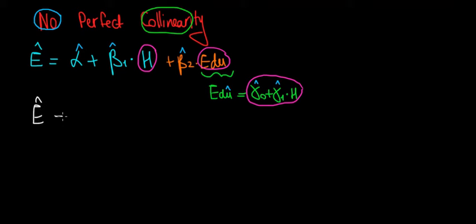So the earnings is going to be equal to, let's just open the brackets and see what we get. We will have our constant alpha. I put the hats because this is all based on sample data. So we have beta 1 multiplied with the height, and then we go to the next term.